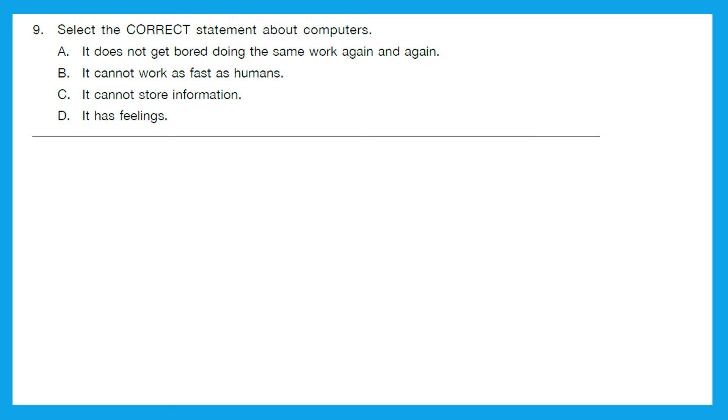Question 9: Select the correct statement about computers. A: It does not get bored doing the same work again and again - that is absolutely correct. B: It cannot work as fast as humans - incorrect. C: It cannot store information - incorrect. D: It has feelings - no, incorrect. So the correct statement was option A, it does not get bored doing the same work again and again.